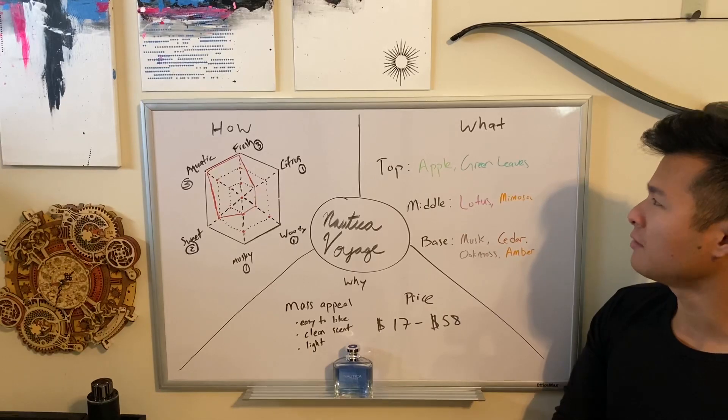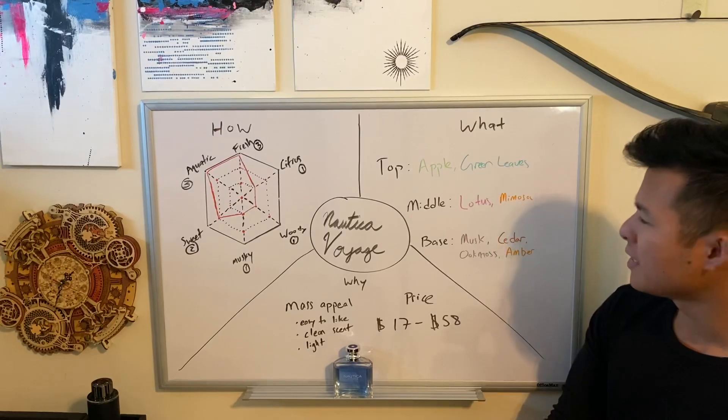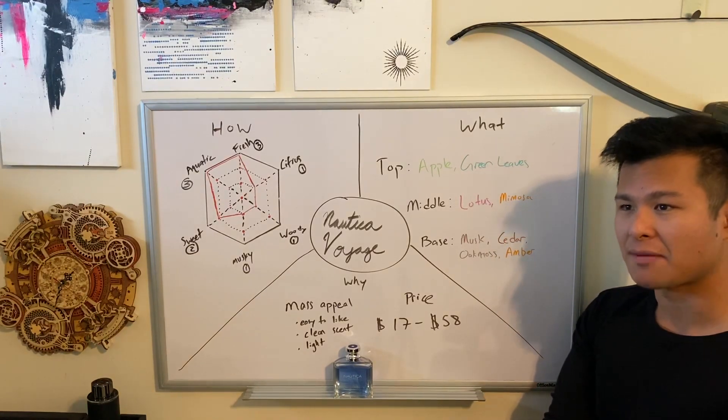So I want to talk about now the boring part, what's it made out of? Well top notes, apple, green leaves, middle notes, lotus, and mimosa.